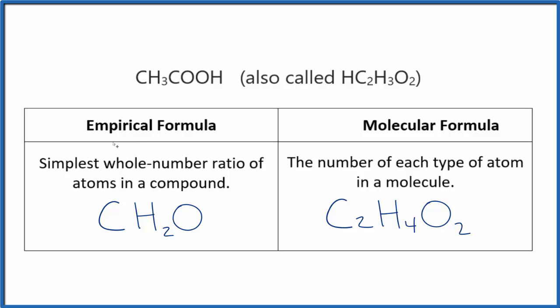So it's a simpler format. It doesn't have as much information. This tells us a lot more about the numbers of each type of atom. This is just the ratios.